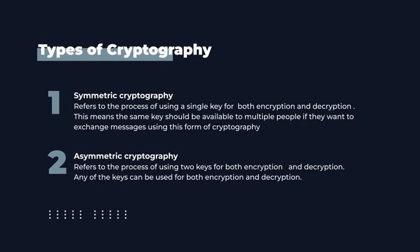Asymmetric cryptography refers to the process of using two keys for both encryption and decryption, where any of these keys can be used for either encryption or decryption. Cryptography is a wide topic, so this is just an introduction and we are going to talk more about it as a separate topic on its own.